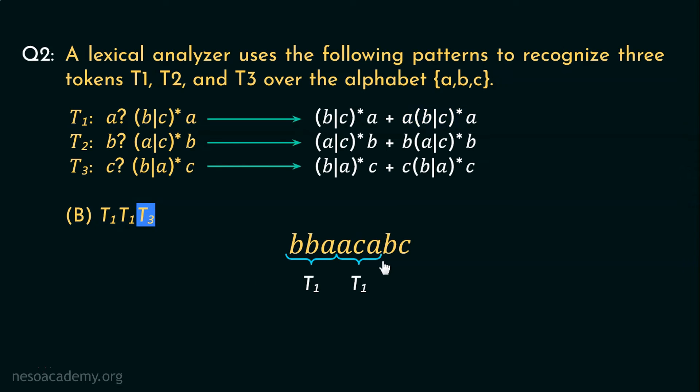Consider T3. We have only B, C left in the string. If we select this portion from (B or A) whole star, we can derive B only and the following C will give us B, C. So using option B that is T1, T1, T3, we can also represent this string.